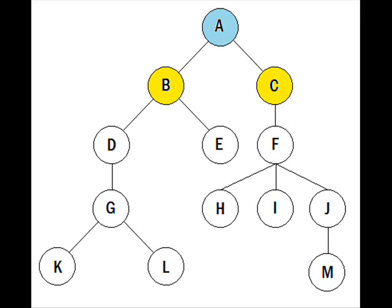Starting at node A, we have two nodes connected to it: B and C. As the algorithm implies, we take the left node first, which is B. Going down to B, connected to it are nodes D and E. Choosing the leftmost child D, we make it our current state. Since D has only one child, we go to node G. From G we have two options, K and L. Choosing the leftmost, K, we visit it. Since K has no child nodes, we backtrack to G to check for unvisited children.